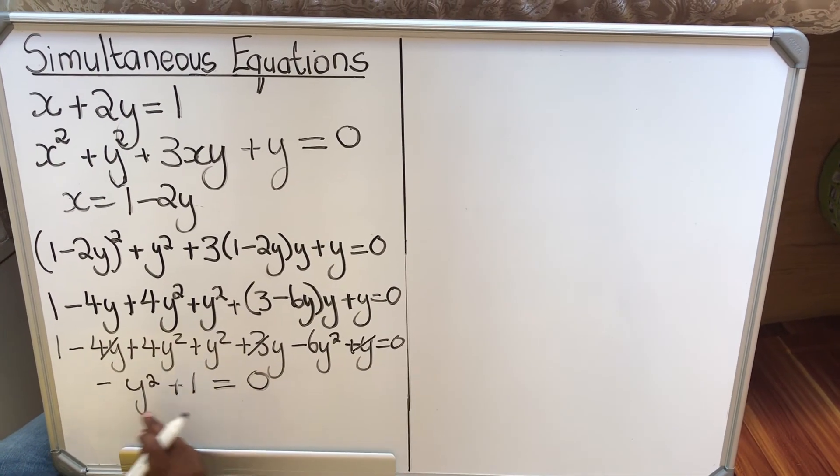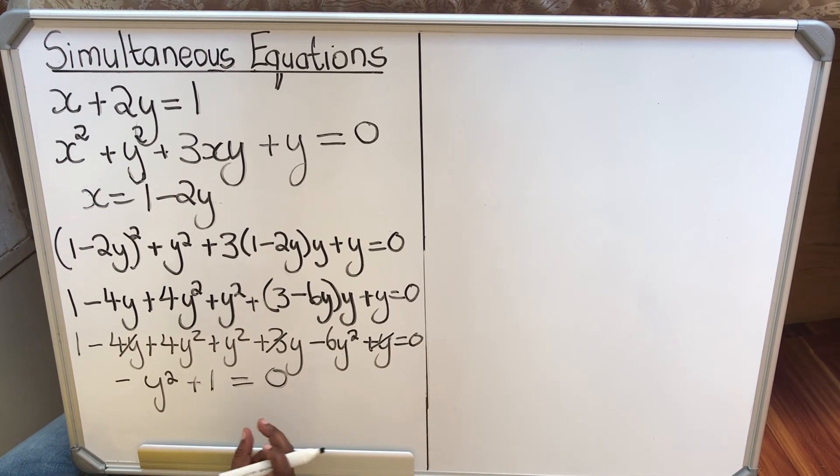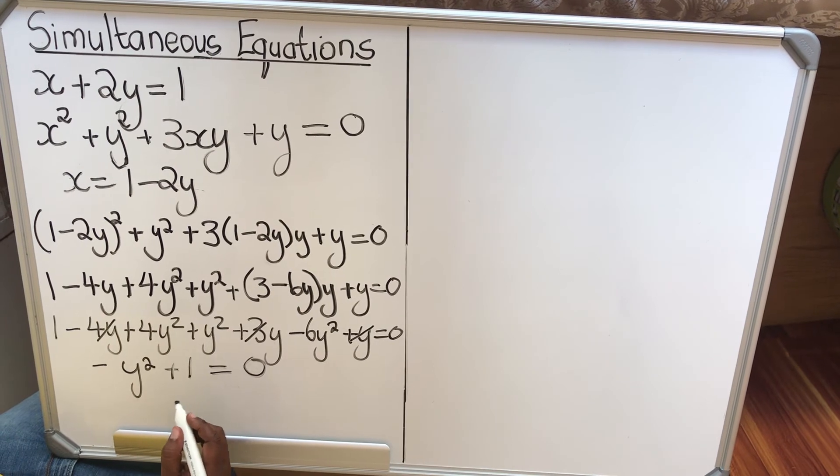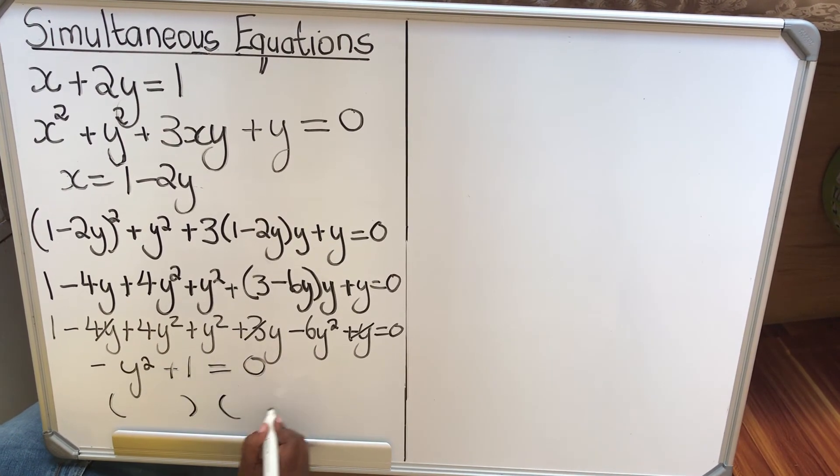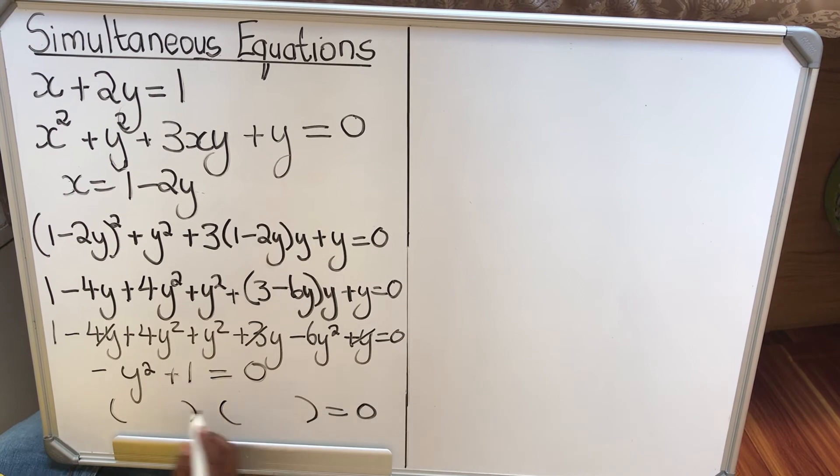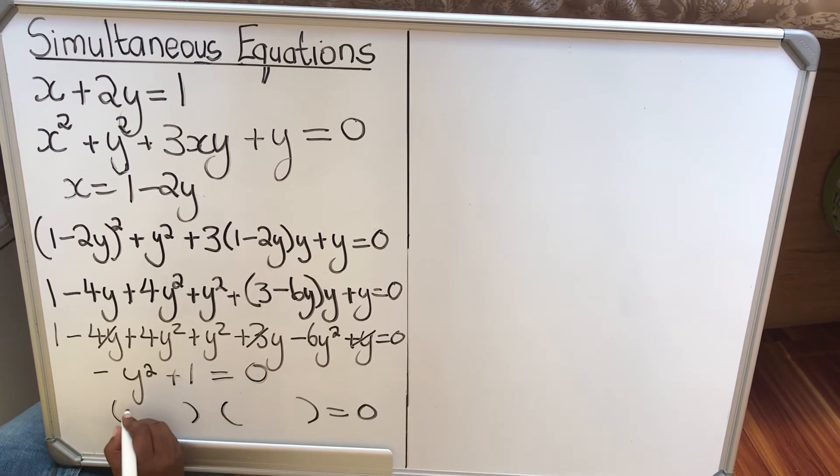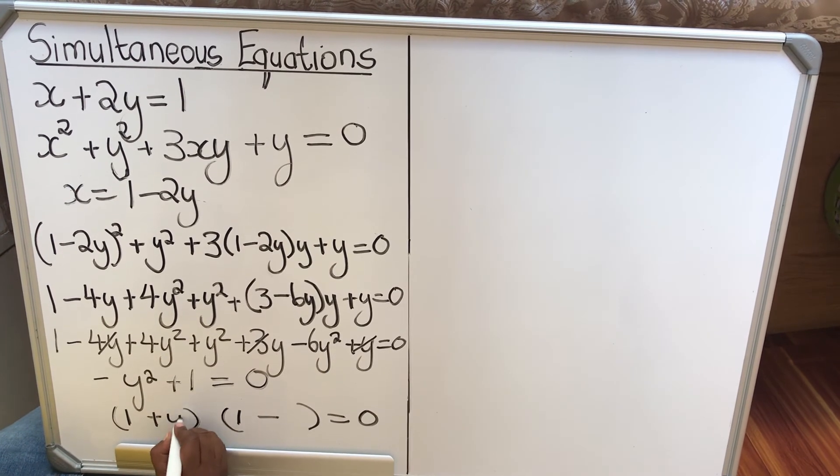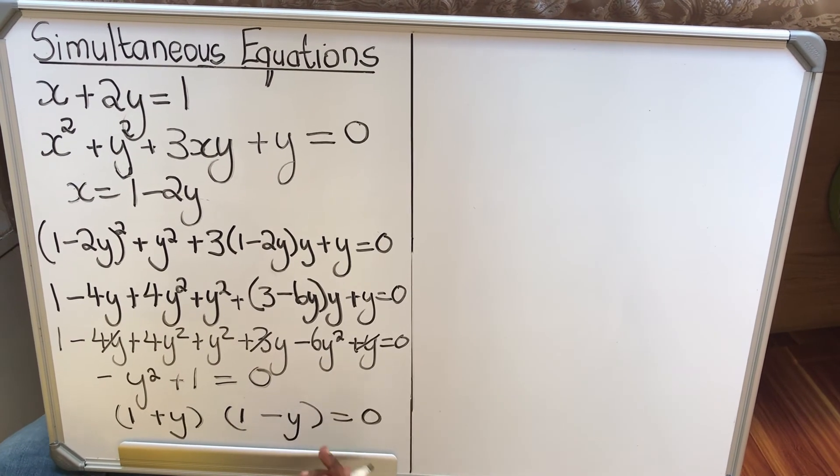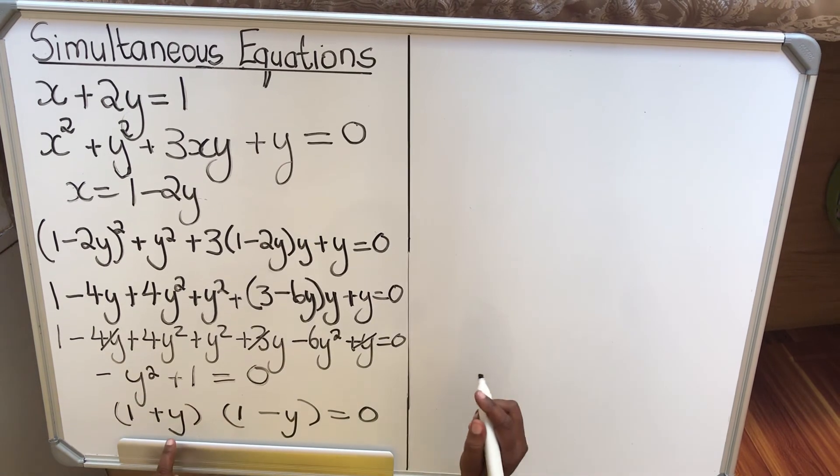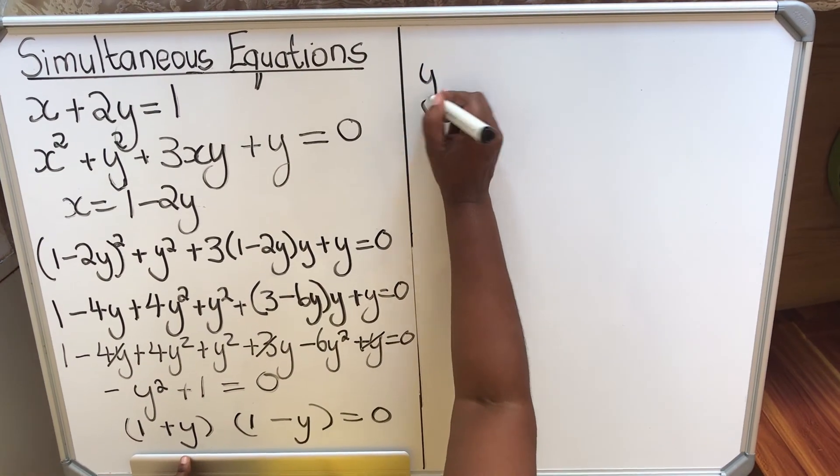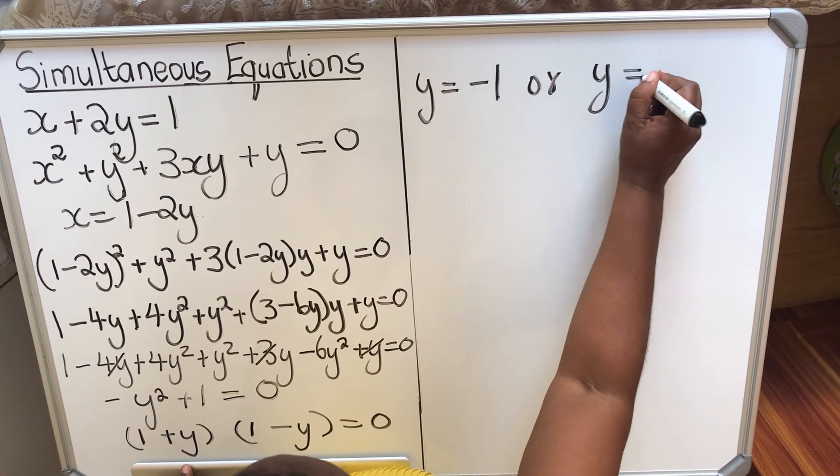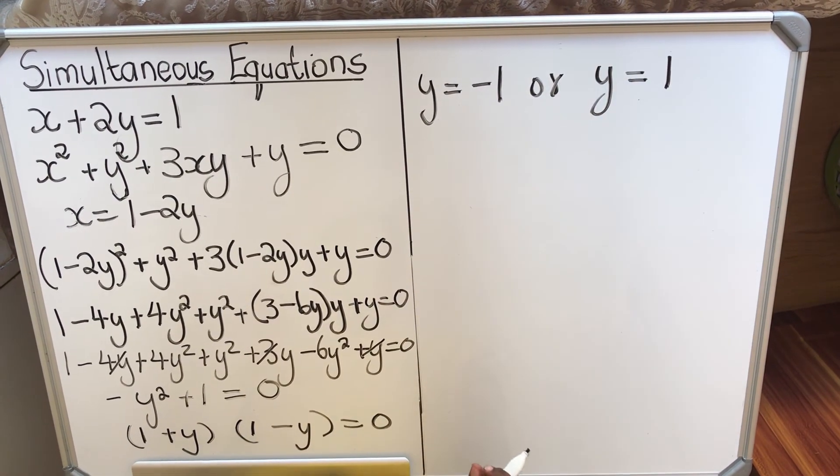There are two ways you can do this. You can find the difference of two squares, or you can take this and square it. I choose to find the difference of two squares. So I will have 1 and 1, plus and minus y and y. So here I will have y equals minus 1, or y equals 1 for this bracket.